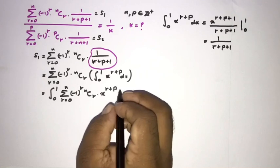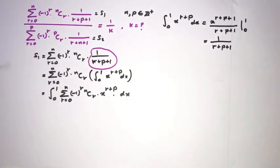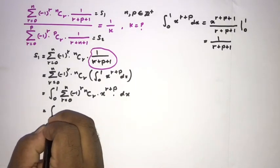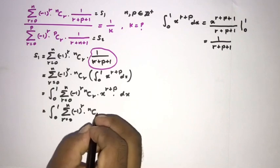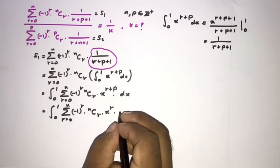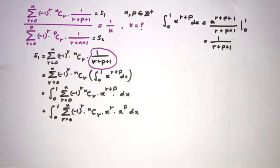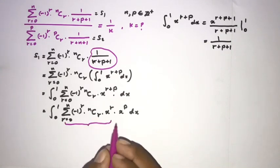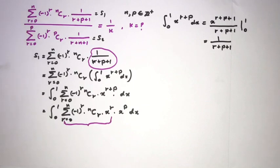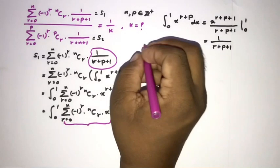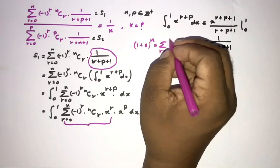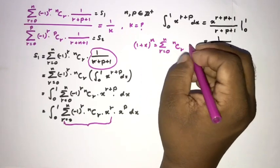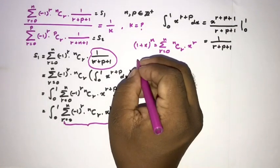This gives us the integral from 0 to 1 of the sum from 0 to n of minus 1 to the r times n choose r times x to the r, all times x to the p, dx. This inner sum is familiar because we know the binomial expansion: 1 plus x to the n equals the sum from r equals 0 to n of n choose r times x to the r.